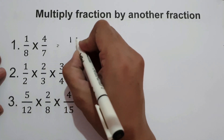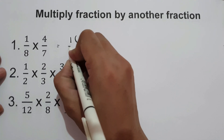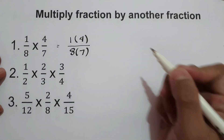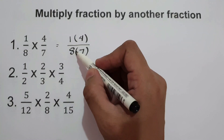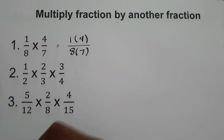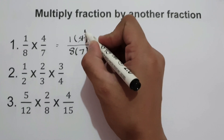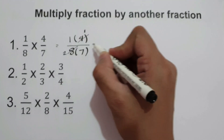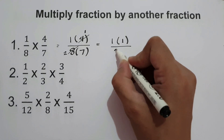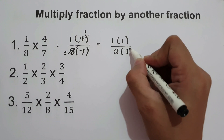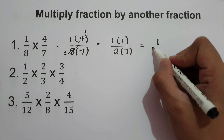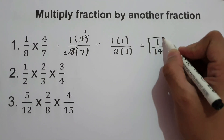So for 1 over 8 times 4 over 7, that is 1 times 4 over 8 times 7. In this case, we can cancel 4 and 8 because they are divisible by 4. So 4 becomes 1 and 8 becomes 2. Therefore, we have 1 times 1 over 2 times 7. The answer is 1 over 14. So this will be our final answer.